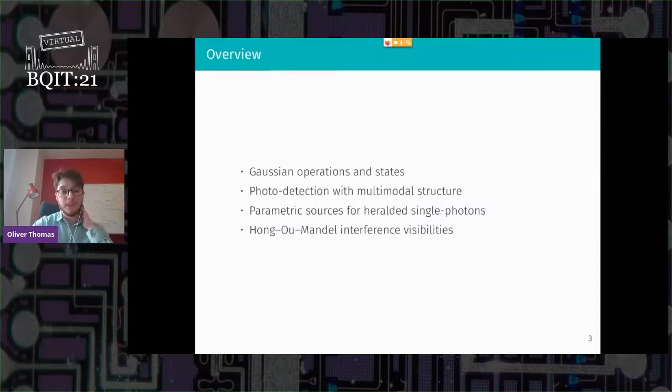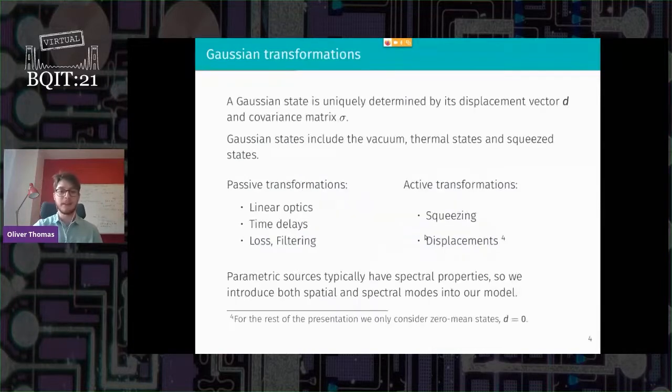Just a brief overview. I'm going to talk about Gaussian operations and the Gaussian states we're interested in. And then the new work we've done here is on discrete variable type measurements, so photo detection where you have multiple spatial modes and multiple spectral modes at the same time. And then the applications we look at are parametric sources for heralded single photons, and then we look at modeling physically realistic Hong-Ou-Mandel interference visibilities.